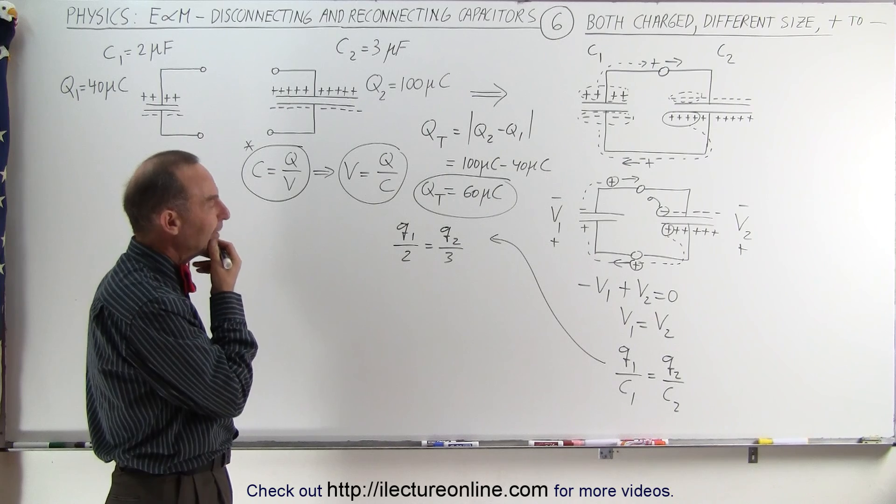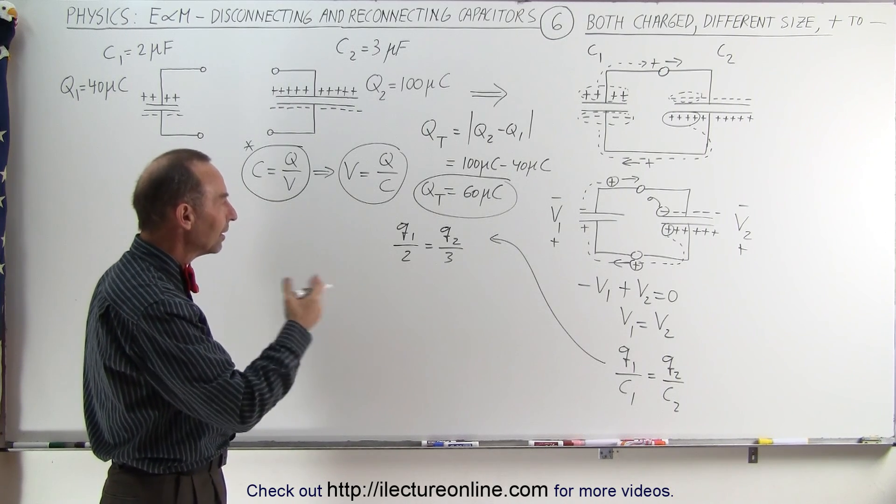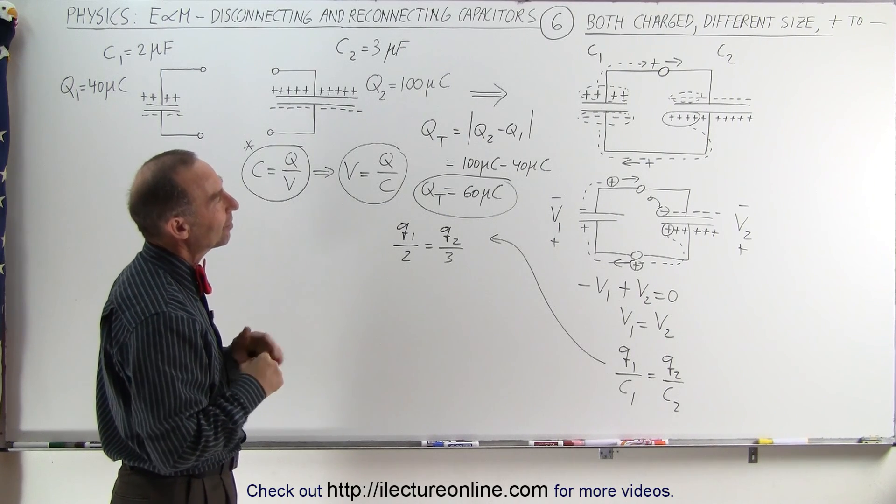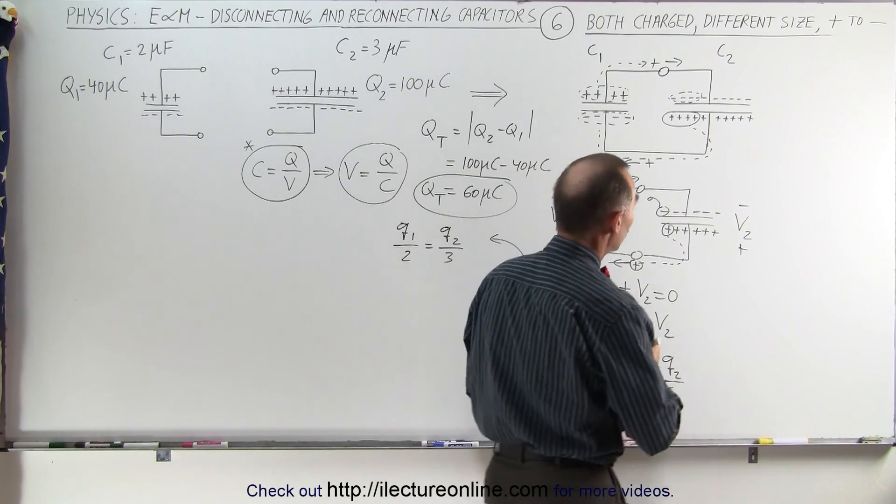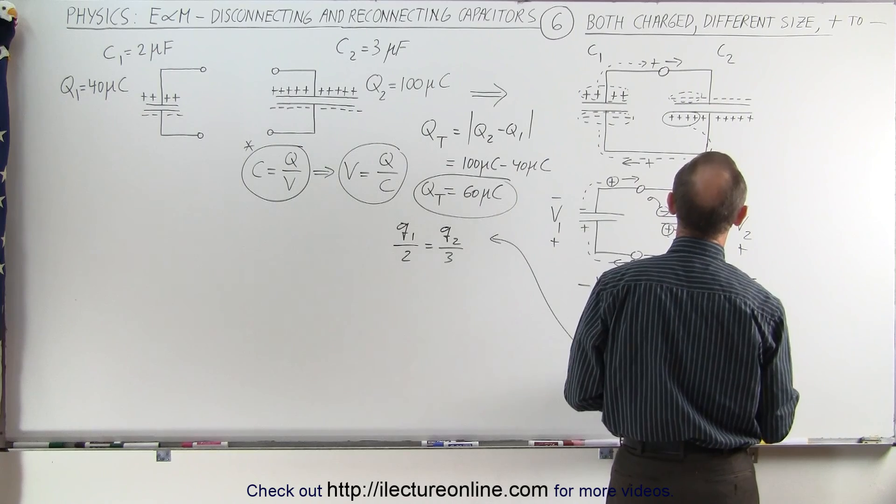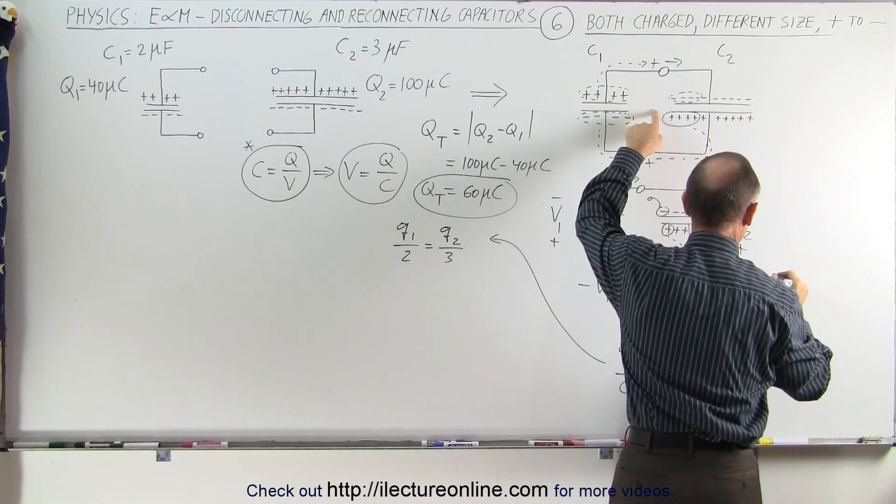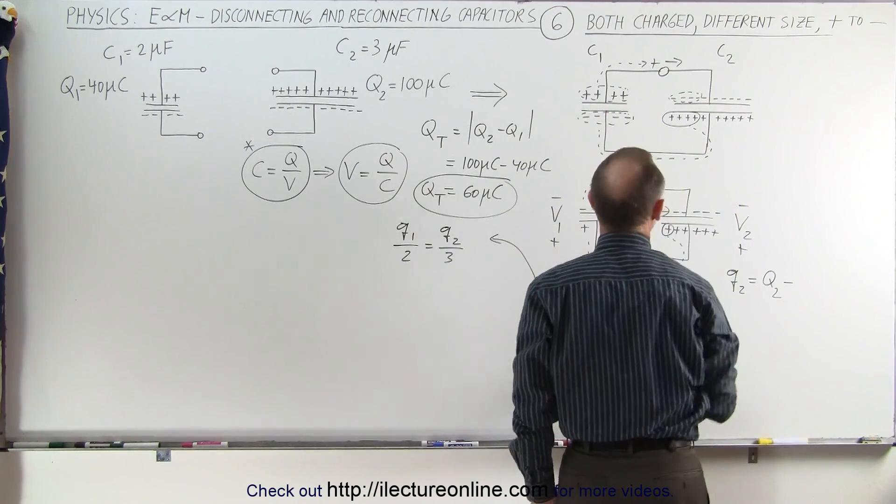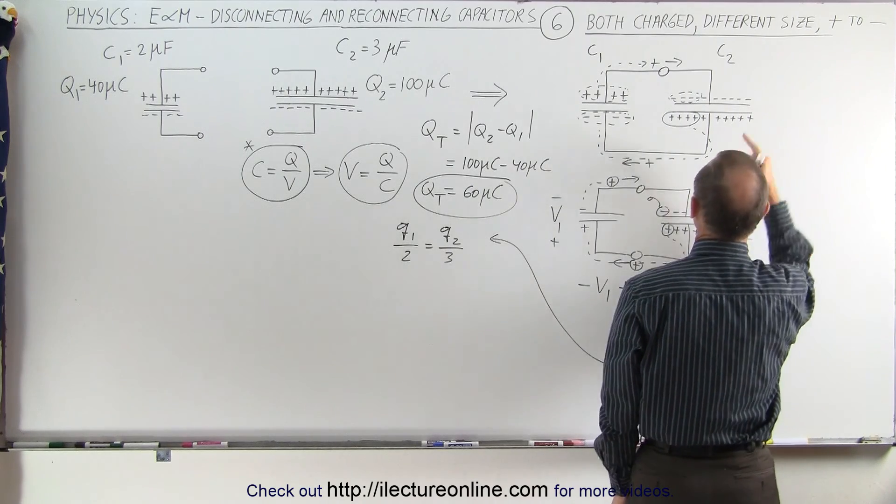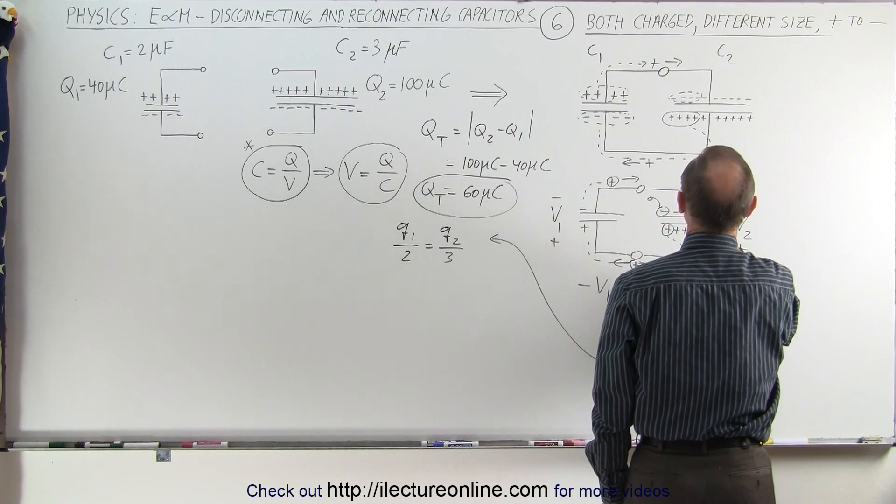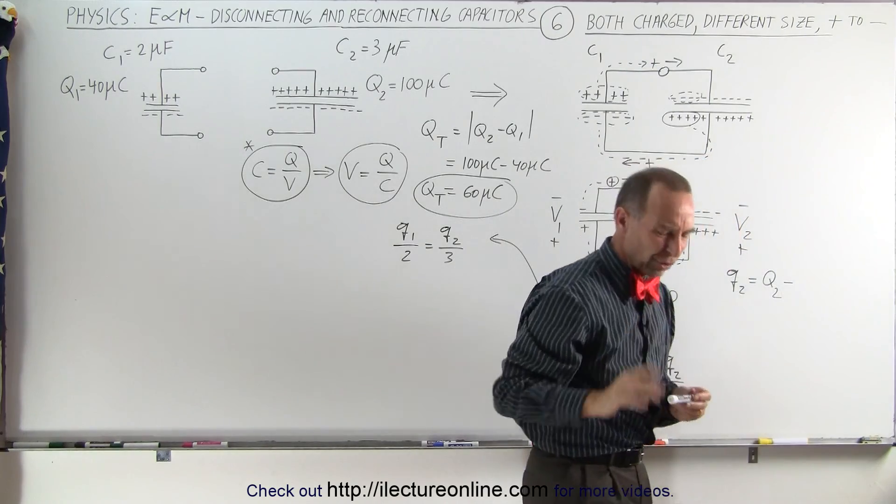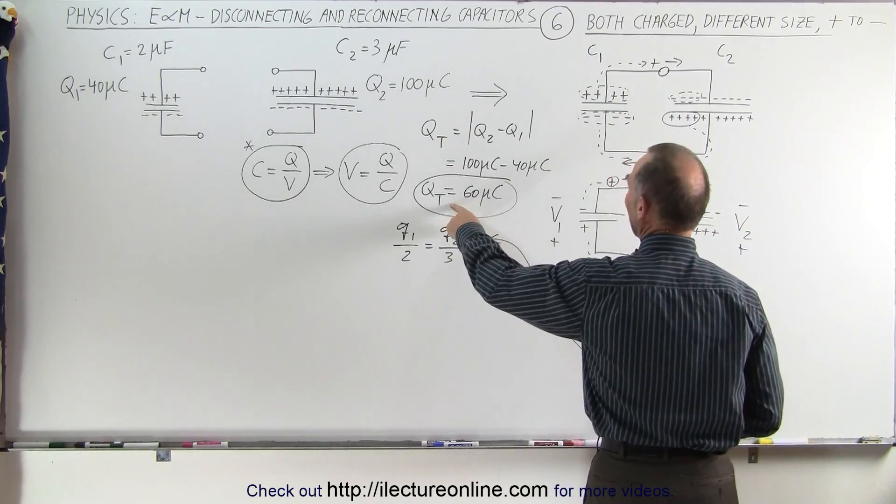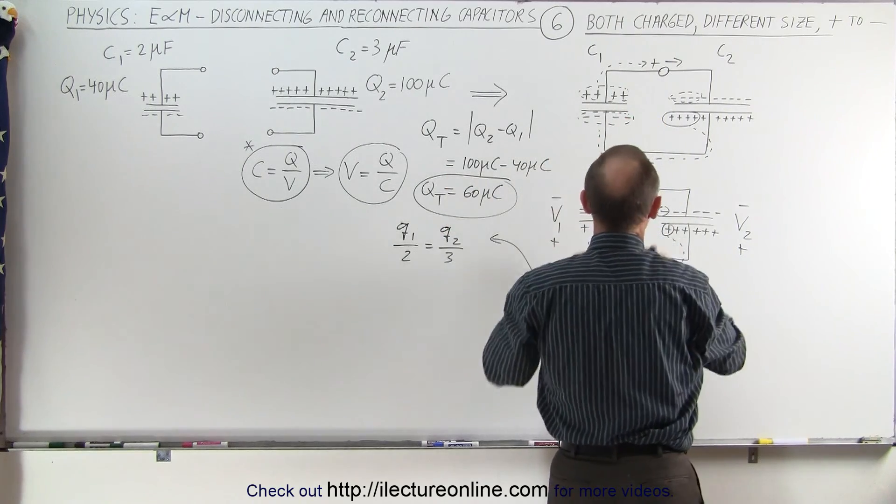All right, now I need an equation that establishes the relationship between Q1 and Q2 in some other way. Well, let's see. What I can say is that Q2 is going to equal the charge that it started with, which is big Q2 minus the charge that migrated to C1. How much charge did migrate over there? I think I'm going to try it just a little bit different. It might be just better to look at it this way.